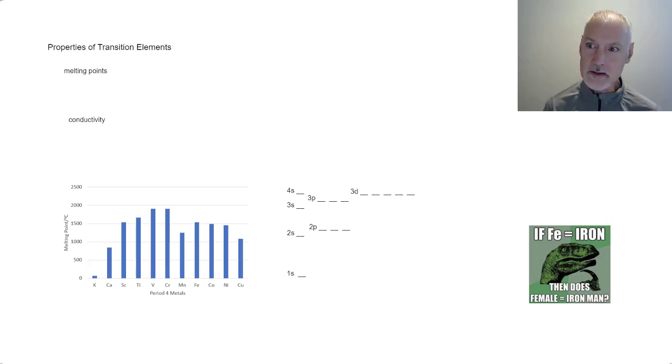Hi, this program is going to take a look at the properties of the transition elements, and in particular their melting points and electrical conductivity. Down here I have a graph of the melting points of some of the elements in period 4 of the periodic table.